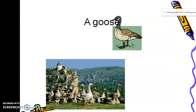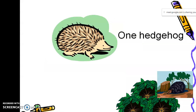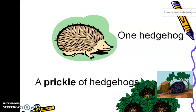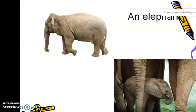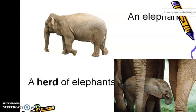This is one bird, and when there are many birds, they are called a flock of geese. Then this is one, and the group is called prickle, prickle of hedgehogs. They are called a herd of elephants. You have studied the herd of elephants.